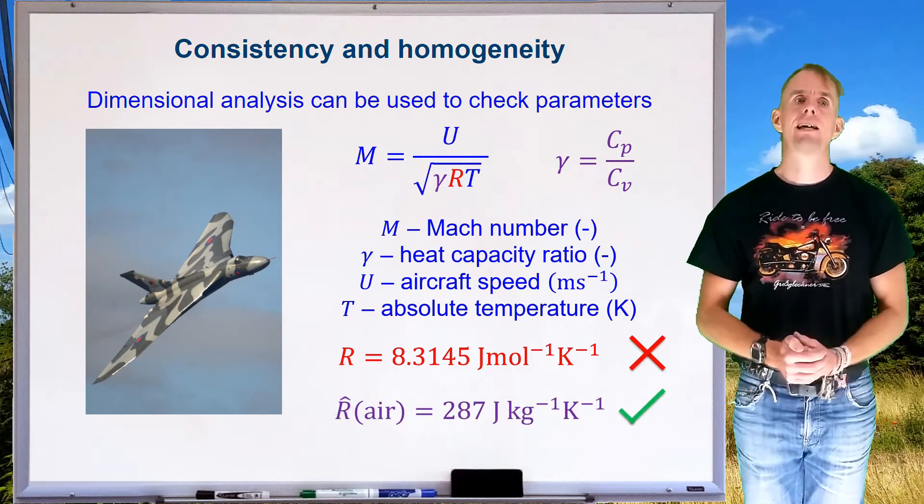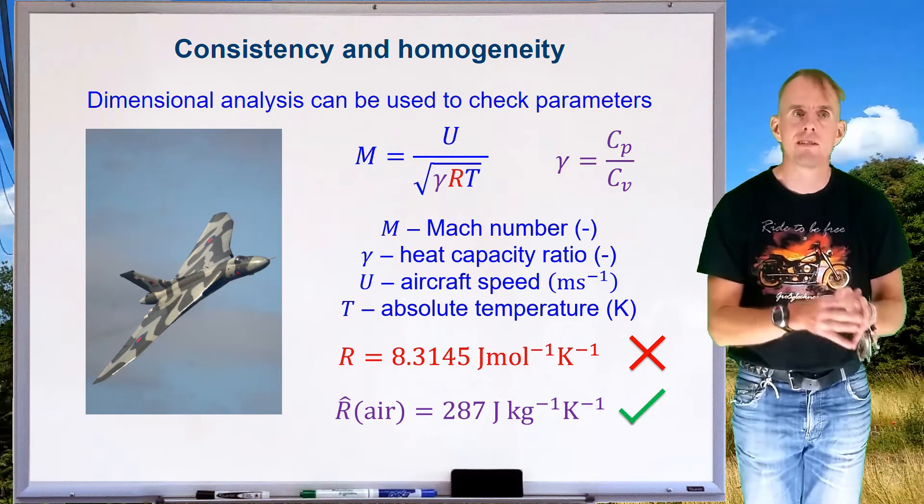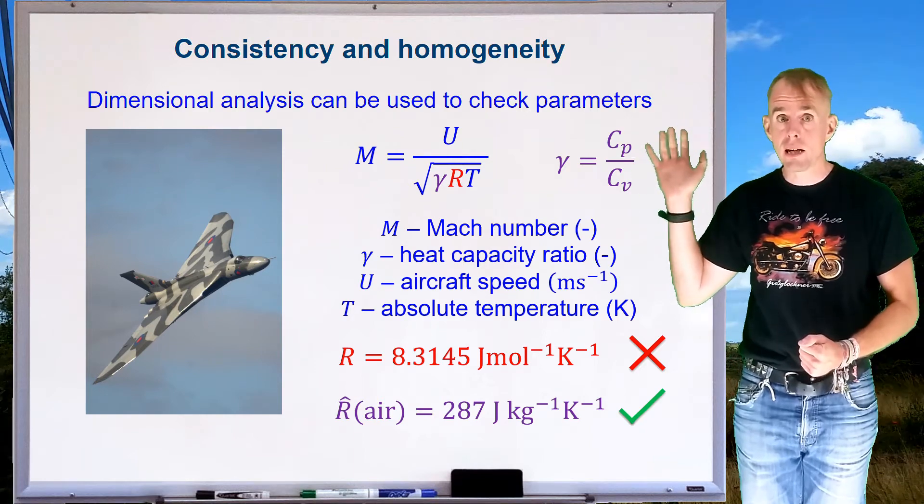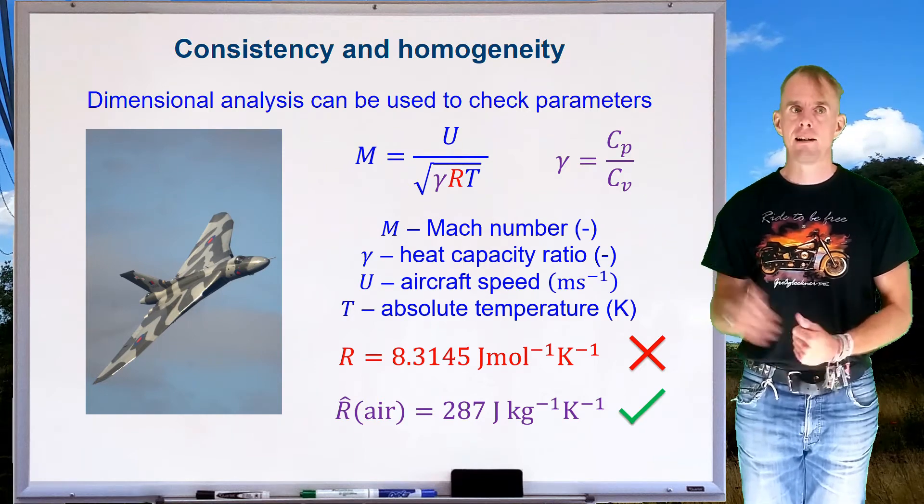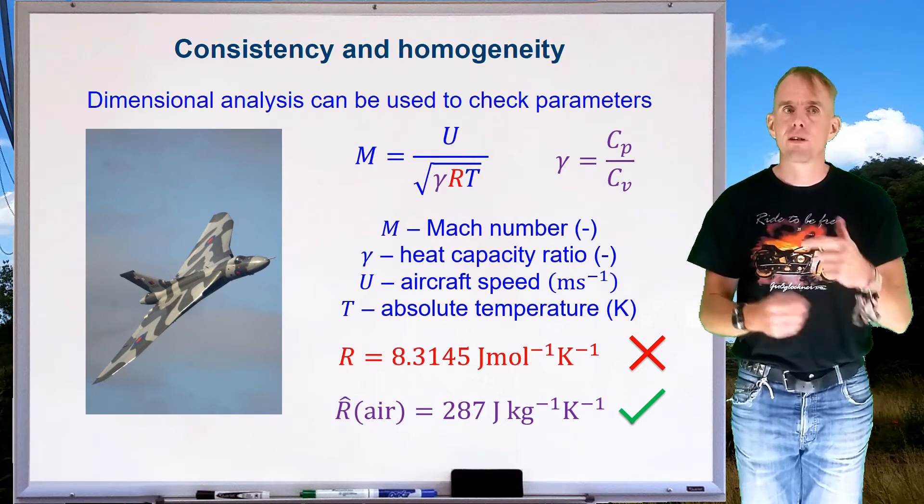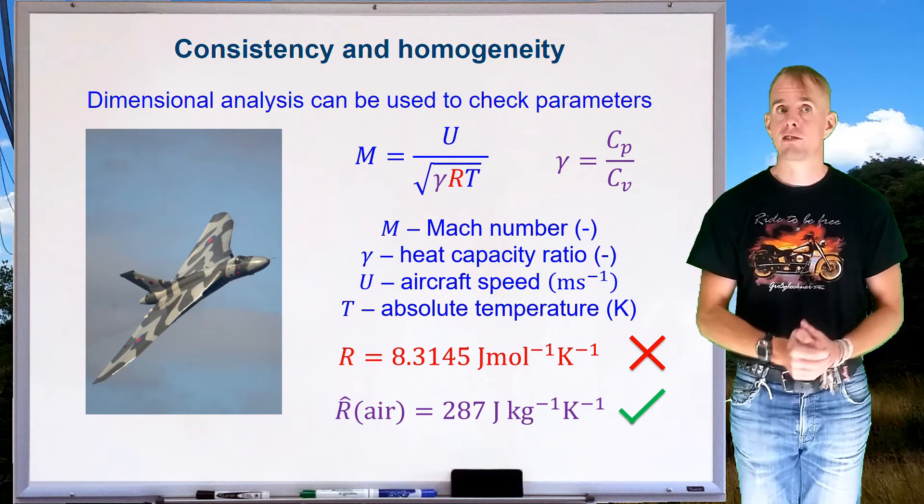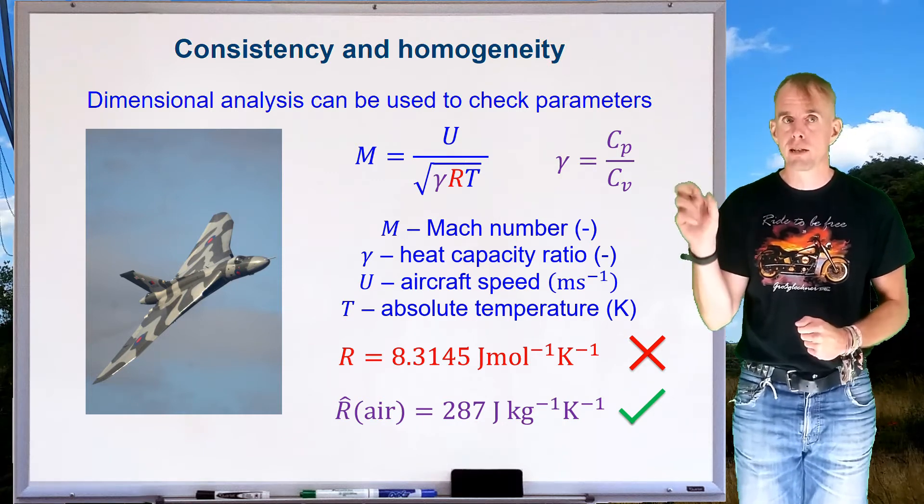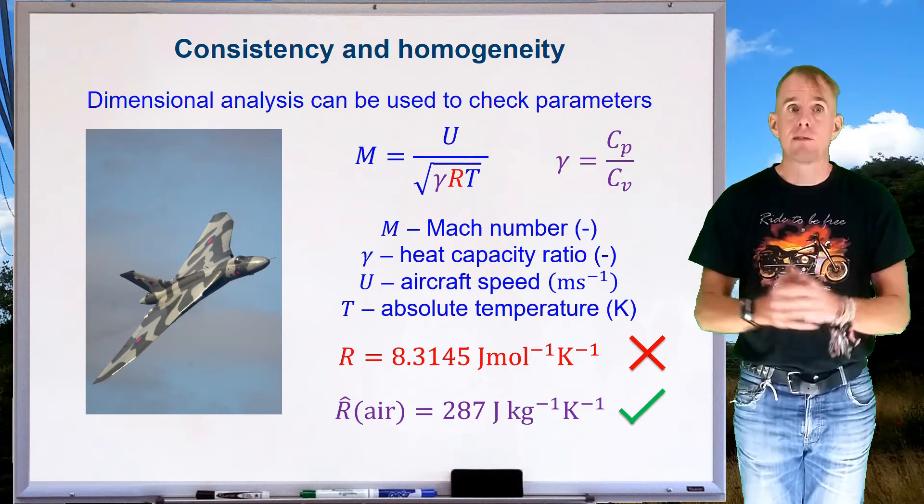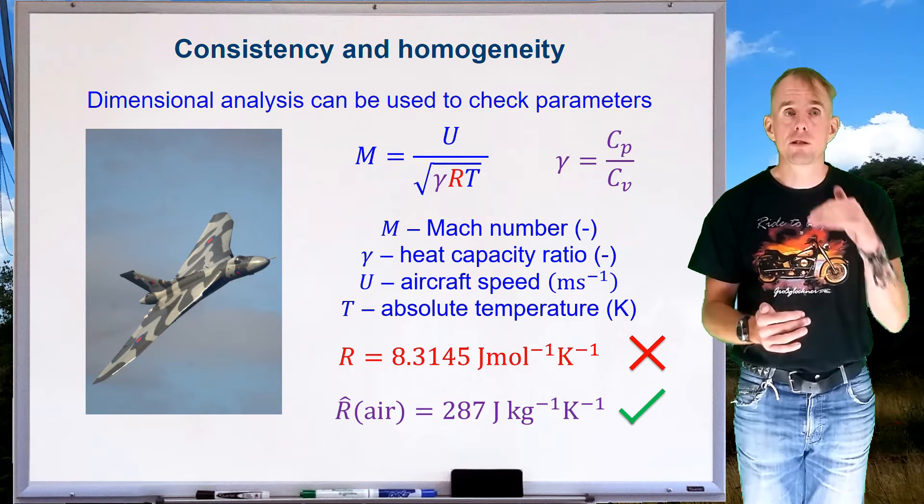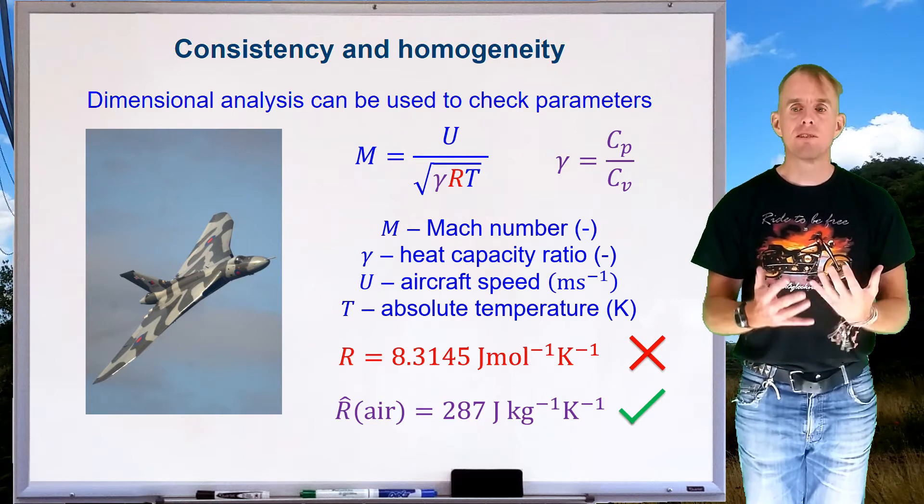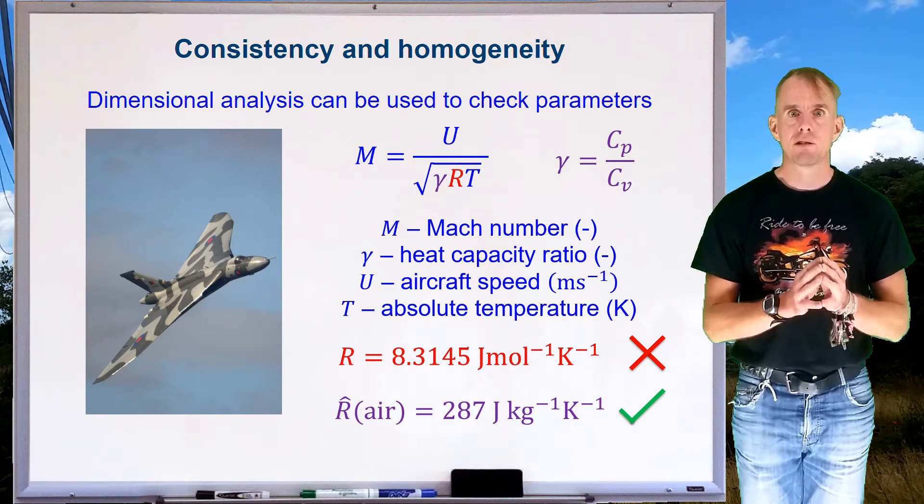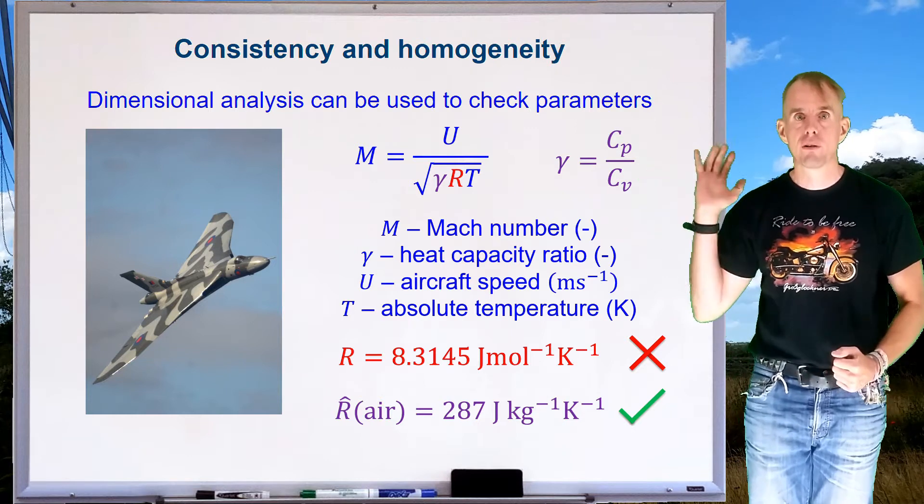There is another gas constant. It is a specific gas constant. It's specific to a material. It's R divided by relative molecular mass. And so what we should be using here is the specific gas constant for air. And I've written this R hat to delineate it from R. And R hat is 287 joules per kilo per Kelvin. And if you look at those units, joules per kilo per Kelvin, and the other dimensions that we have within the expression U over root gamma RT, we will see that all the units cancel. And so the dimensional analysis here has allowed us not to make a mistake by using the wrong physical constant.